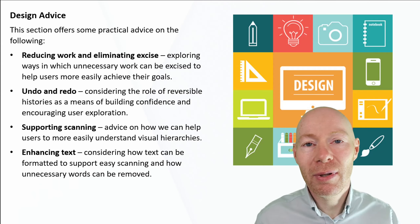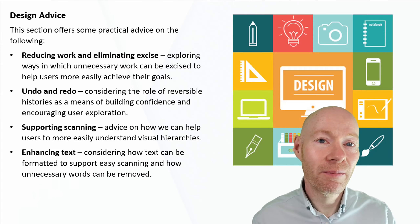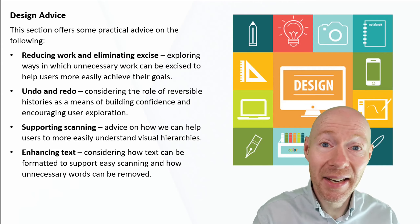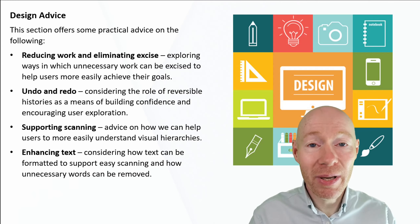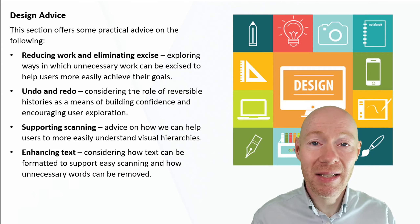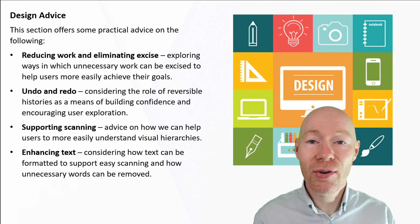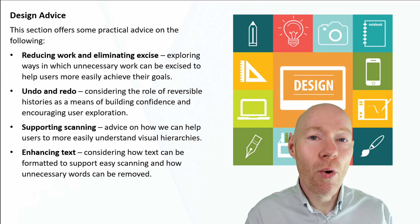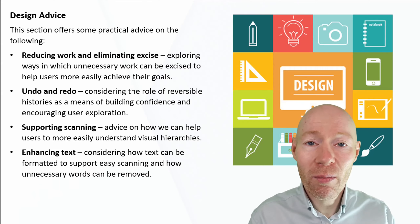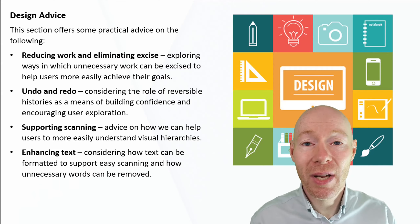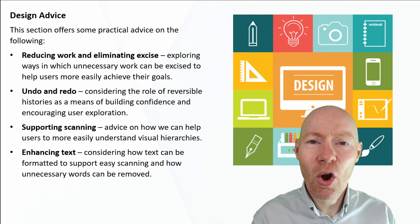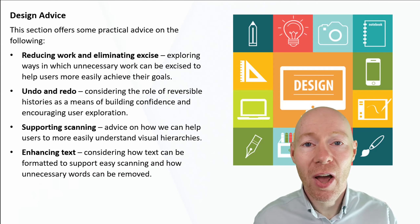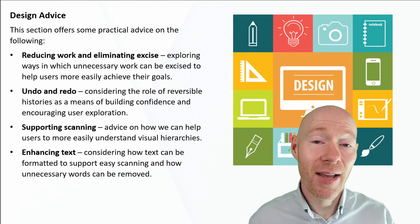We'll then go on to look at text more generally and we'll consider a wide range of things. One is actually related to scanning and hierarchy — about how do we position and set out our text so that it makes it easier for the user to glance and understand the structure. But we'll also think about how we express it, the words that we use, the right form of words, and how we can cut text that we don't actually need. So those are going to be the topics we'll explore, starting off with how we can reduce work and eliminate excise.